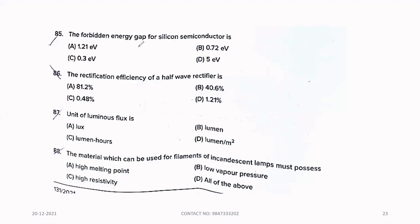Eighty-five. The forbidden energy gap for silicon semiconductor is, 1.12 electron volt. Eighty-six. The rectification efficiency of a half wave rectifier is, option B, 40.6.